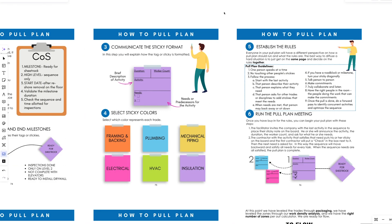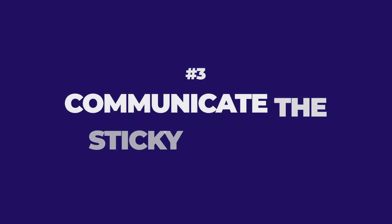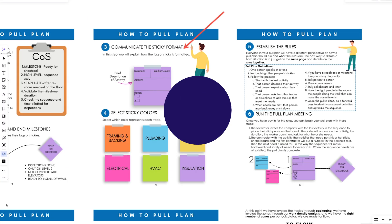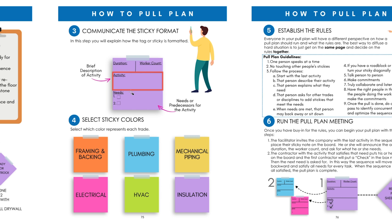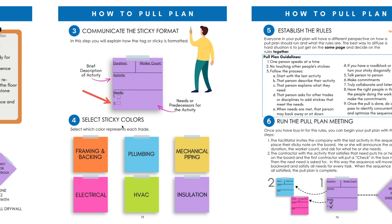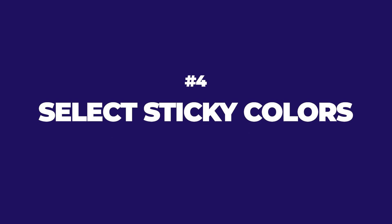Once we've established the milestones, communicate the sticky format — this is really important. The activity is common to all pull plans, but I need you to list the needs — also called predecessors or constraints, though I prefer 'needs.' This enables every trade partner to identify two things they need in order to have their activities done on time per their commitment.